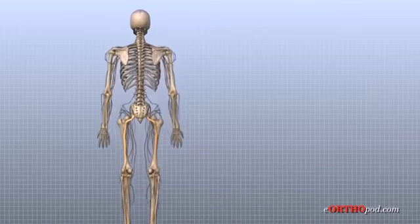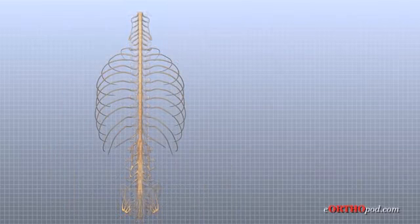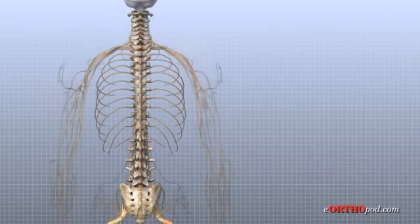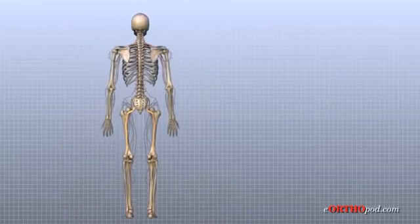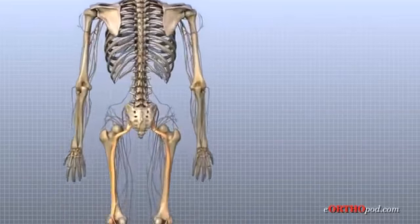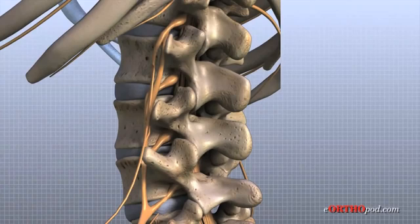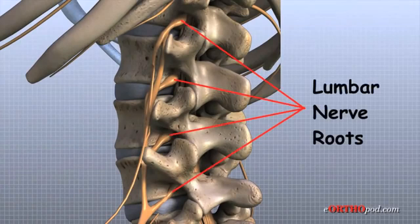As the spinal cord travels from the brain down through the spine, it sends out nerves on the side of each vertebra called nerve roots. These nerve roots join together to form the nerves that travel throughout the body and form the body's electrical system.